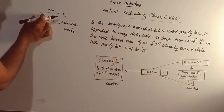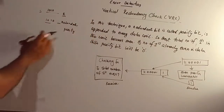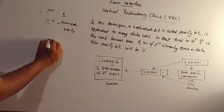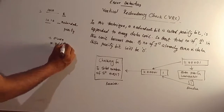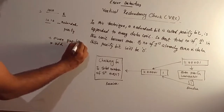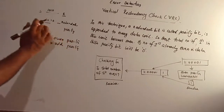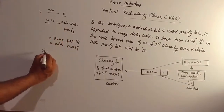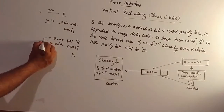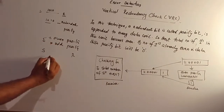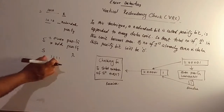If you send the data, you will send one parity bit. There are two types: even parity and odd parity. If we send data, an even number of 1s must be maintained.